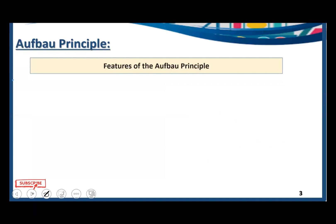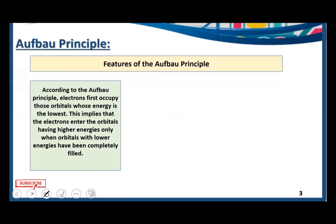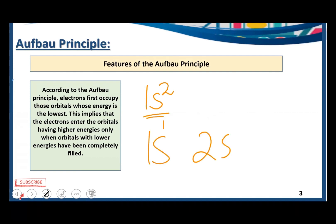There are some salient features of the Aufbau principle. According to the Aufbau principle, electrons first occupy those orbitals whose energy is the lowest. This implies that electrons enter orbitals of higher energy only when the orbitals with lower energies have been completely filled. We fill lower energy levels completely before moving to higher energy orbitals.